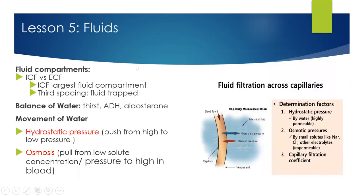First, let's review fluids. Remember there are two fluid compartments: the intracellular fluids and the extracellular fluids — fluids inside or outside the cells. Intracellular fluids is the largest; it holds the largest percent of human body weight. Fluid is balanced with thirst, with the antidiuretic hormone, and with aldosterone.